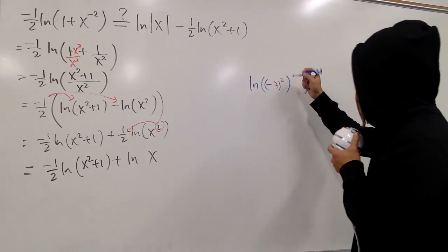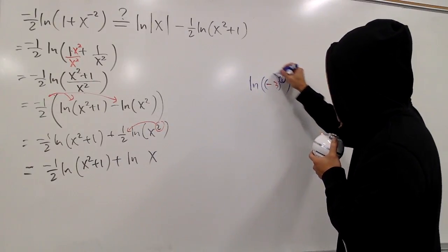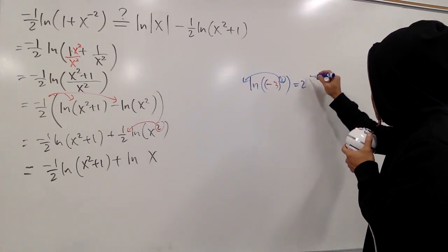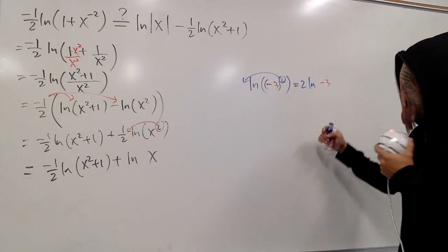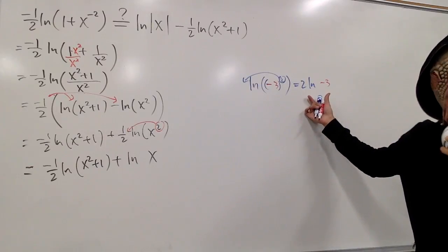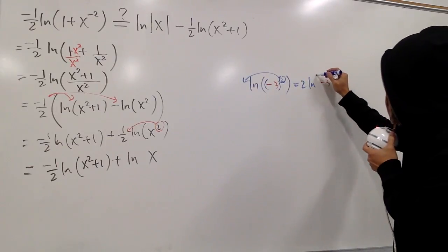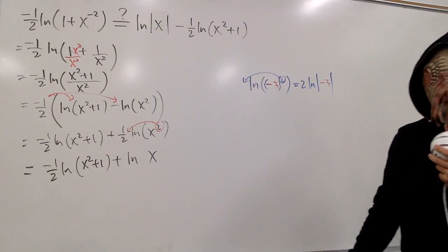Well, when you plug, when you bring the power to the front, you have 2 ln, and this was a negative 3. You cannot just put parentheses, otherwise this is not good anymore. In fact, you really have to have the absolute value.